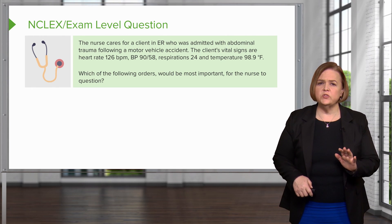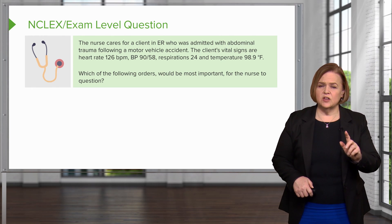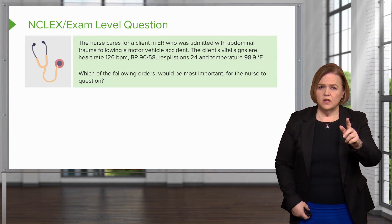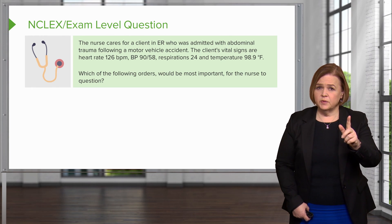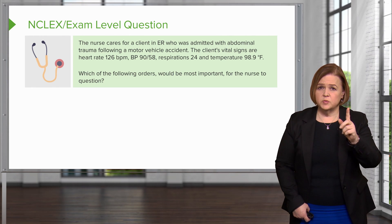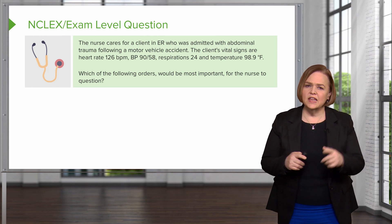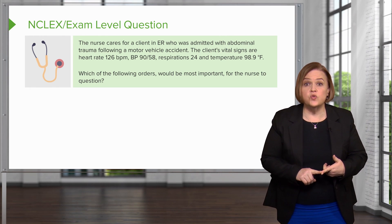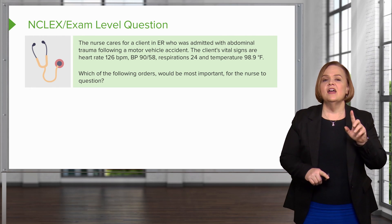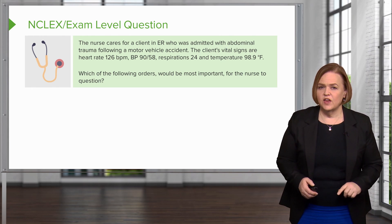Which of the following orders would be most important for the nurse to question? I'm going to question anything that's going to put this patient — trauma, abdominal, worried about bleeding, with a pulse too high and blood pressure too low — at risk. They're showing signs of possible bleeding. But wait, look at that line again: 'most important for the nurse to question' is asking me which of these orders would be unsafe for this patient.